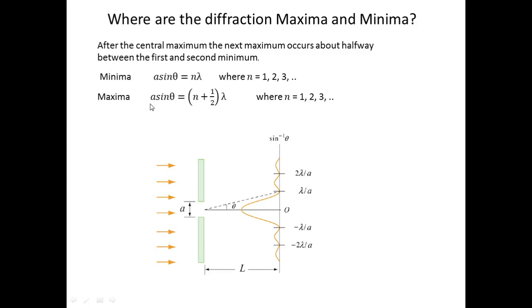So for the minima condition we have a sin θ = nλ where n = 1, 2, 3, and for the maxima we have a sin θ = (n + 1/2)λ where n = 1, 2, 3. In this way we will get the minima and maxima for the diffraction pattern.